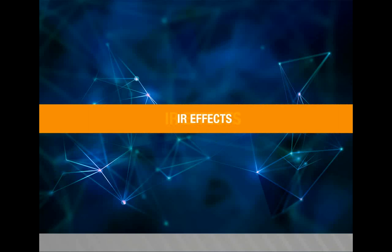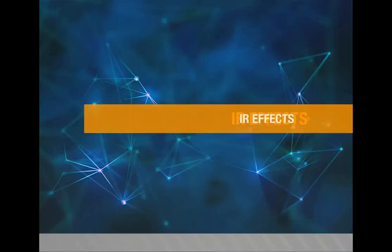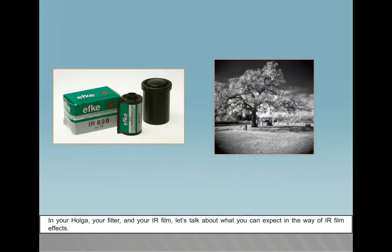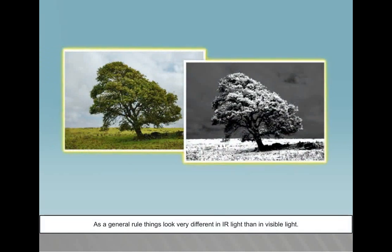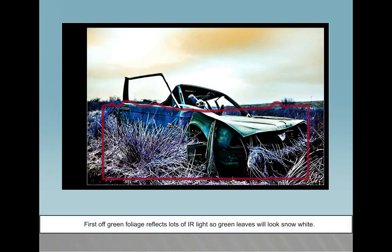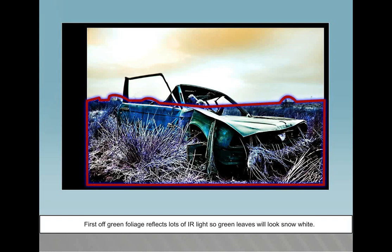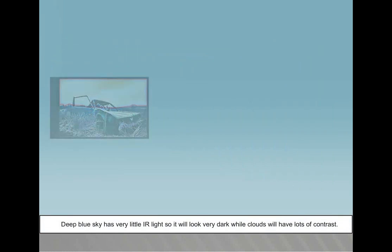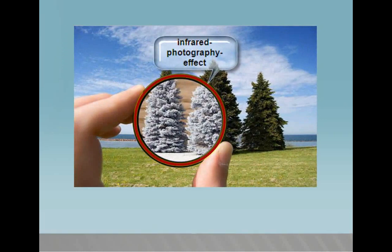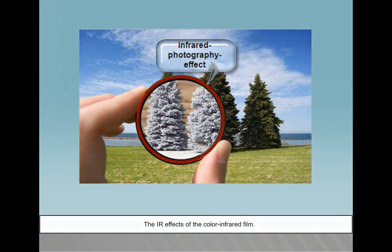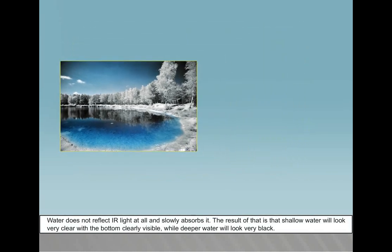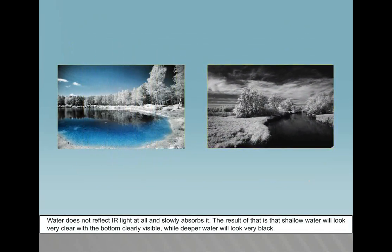IR effects. As a general rule, things look very different in IR light than in visible light. Green foliage reflects lots of IR light, so green leaves will look snow white. Deep blue sky has very little IR light, so it will look very dark while clouds will have lots of contrast. Water does not reflect IR light at all and slowly absorbs it — the result is that shallow water will look very clear with the bottom clearly visible while deeper water will look very black.